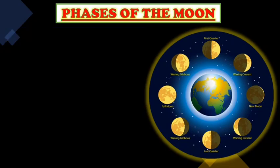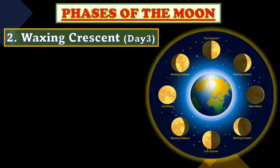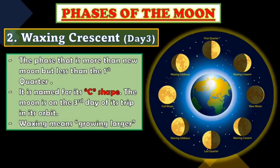Next is day three — the Waxing Crescent. This is the phase that is more than New Moon but less than the first quarter. It is named for its crescent or C-shape. The Moon is on the third day of its orbit. Waxing means growing larger, so the visible lighted portion is gradually increasing — appearing as a C-shape when seen from Earth.